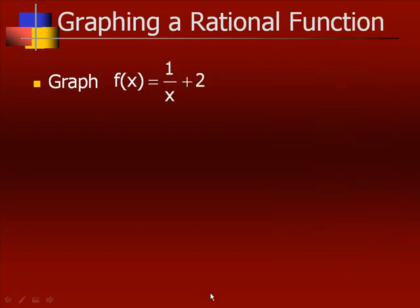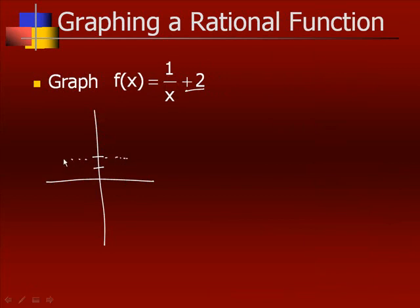What about 1 over x plus 2? This plus two basically means we are shifting our graph up two places. We're moving the origin up, so the graph comes this way down here, then starts here and comes over the other way.